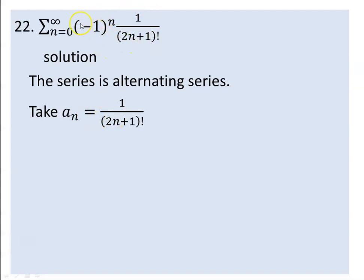Forget about the summation sign for now. What you need to do is consider the remaining part as a_n — the nth term — even though it is not strictly the nth term. Basically, let you take this as a_n. The nth term is together with this one, and you know it is a decreasing sequence.